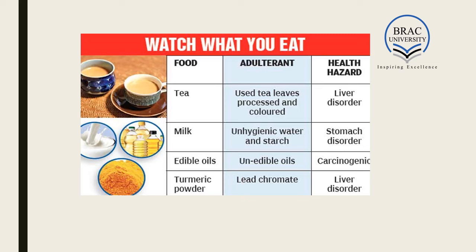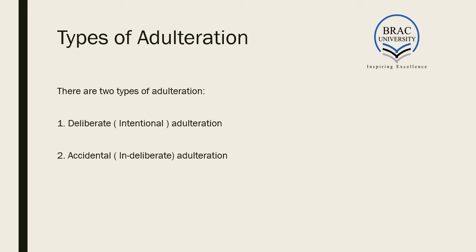Now we will look into the types of adulteration. We can divide adulteration into two broad classes: number one, deliberate adulteration, also termed intentional adulteration; and number two, accidental adulteration, sometimes called indeliberate adulteration.